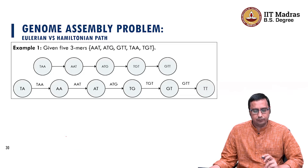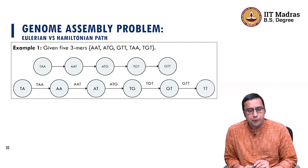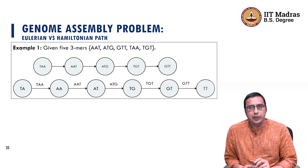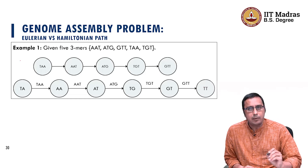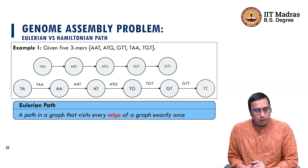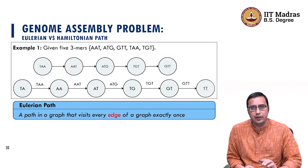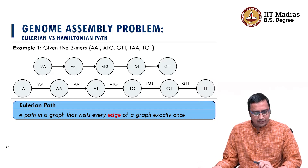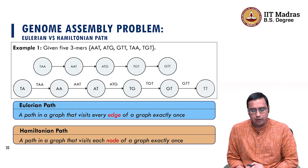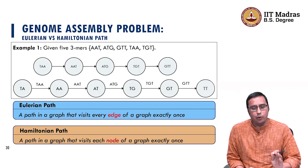Now, can we use the De Bruijn graph to find a Hamiltonian path or Eulerian path? In this slide, we introduce a new path called the Eulerian path and contrast it with the Hamiltonian path. The Eulerian path is a path in a graph that visits every edge of a graph exactly once. On the other hand, a Hamiltonian path visits each node of a graph exactly once. The difference is that in an Eulerian path we traverse each edge once, while in a Hamiltonian path we traverse each node exactly once.